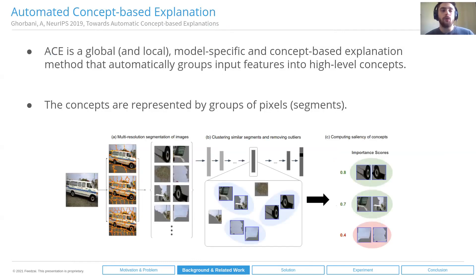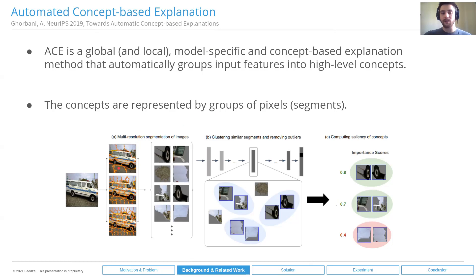One of the most well-known works in concept-based explainability is called ACE, which stands for Automatic Concept-based Explanation. It's a global and local method, model-specific, and provides different concept-based explanations. In this case, the explanations are represented by groups of different pixels or pixel segments. As input we have an image, then we apply a segmentation method, apply clustering, and then by applying TCAV, produce the different concepts and their contribution scores to the final score. The main drawback is that it's really tied to the image domain, so we cannot apply it in the tabular domain.